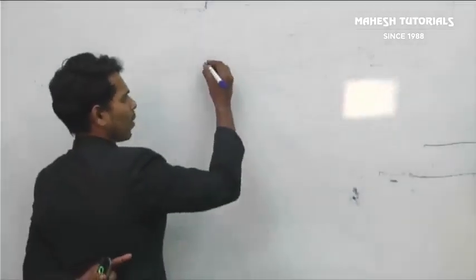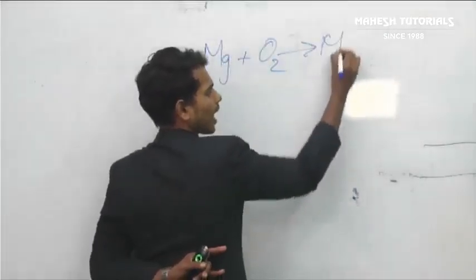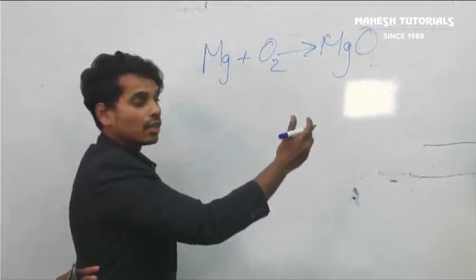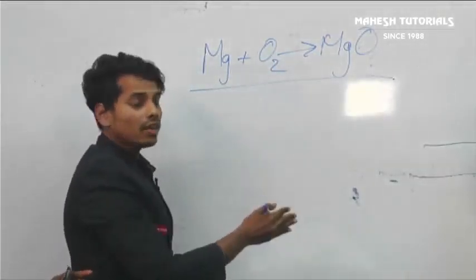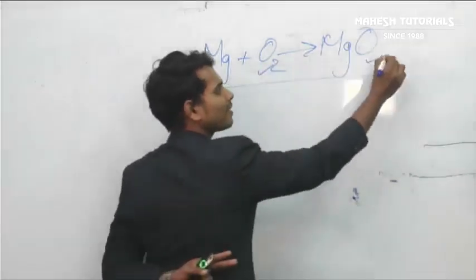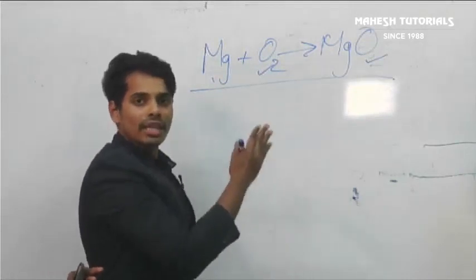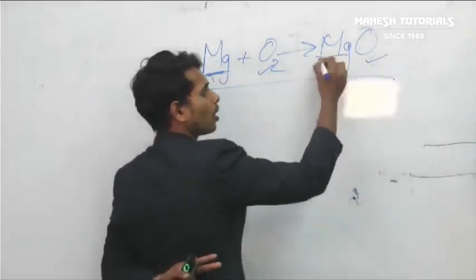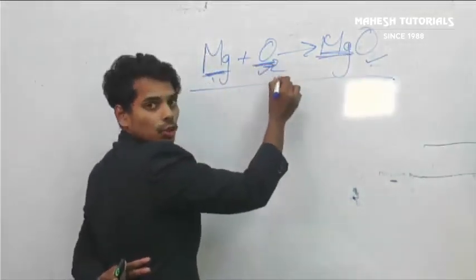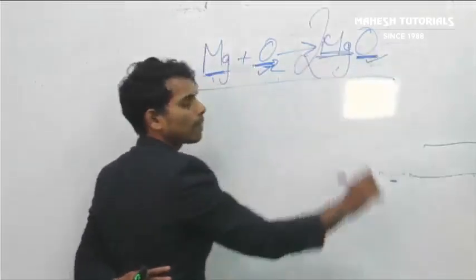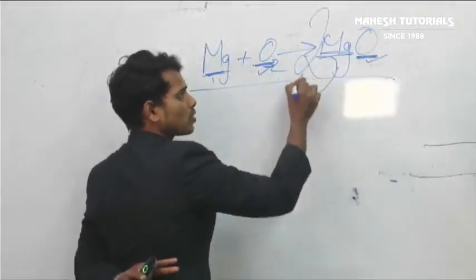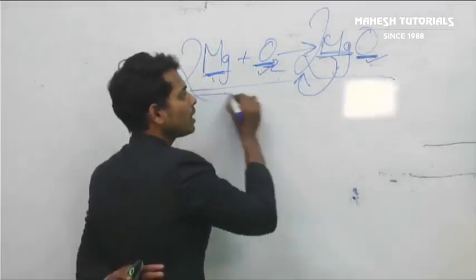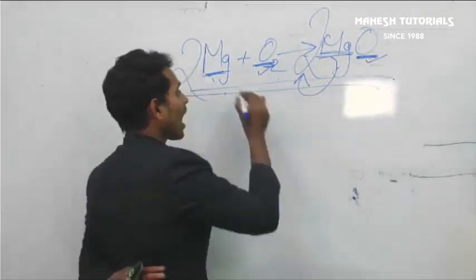For example, take the equation: Mg + O₂ → MgO. When magnesium ribbon burns, it combines with oxygen and forms a white powder of magnesium oxide. This equation is unbalanced because the number of oxygen atoms on the left and right sides is not equal. To balance it: Mg has one atom on each side, but O₂ has two oxygen atoms on the left and one on the right. So we multiply MgO by two, and correspondingly multiply Mg by two on the left. The balanced equation is: 2Mg + O₂ → 2MgO.